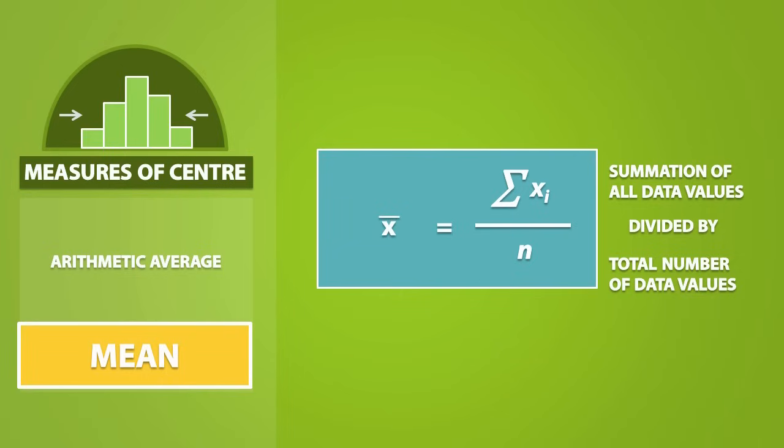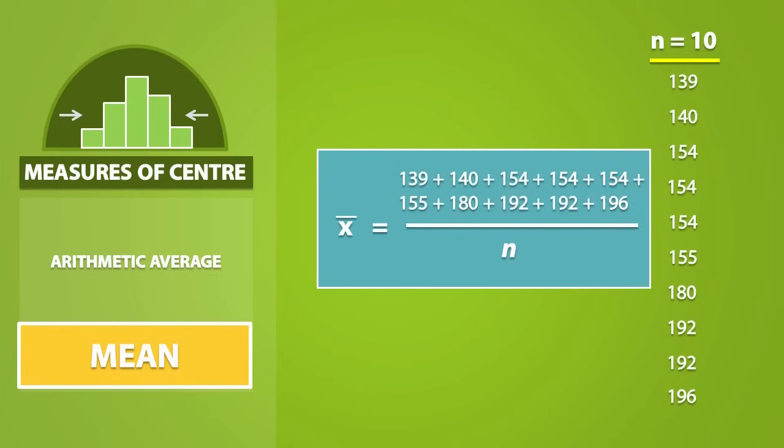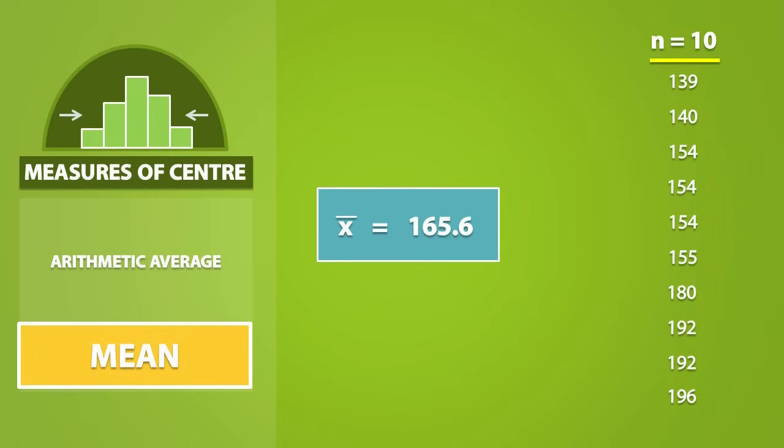So to get the mean for this sample, we add up all the data values, and since there is a total of 10 values, we will divide by 10. As a result, we get a mean or x-bar of 165.6.